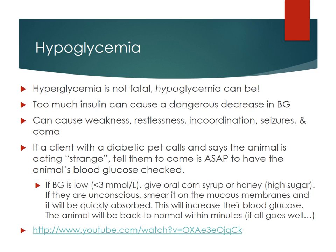Hyperglycemia is not acutely fatal, though chronic hyperglycemia has many negative effects — hence why we treat diabetes. However, hypoglycemia is very dangerous. Too much insulin can cause a dangerous decrease in blood glucose, leading to weakness, restlessness, incoordination, seizures, and coma. If a client with a diabetic pet calls saying the animal's acting strange, have them come in immediately and check blood glucose right away. If it's under 3, they're hypoglycemic. Give oral corn syrup or honey to raise blood glucose. If unconscious, smear it onto the gums — it will absorb through the mucous membrane.